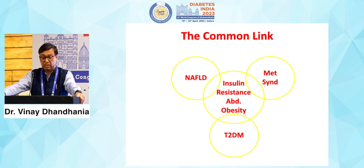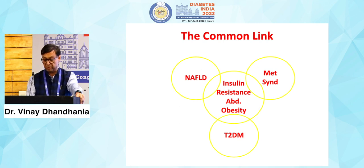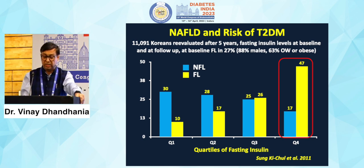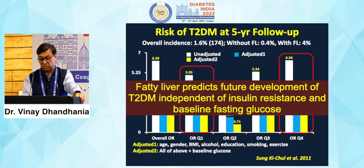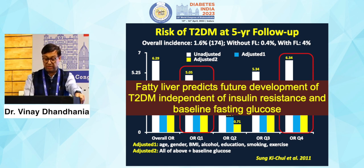A Korean study re-evaluated almost 11,000 Koreans with baseline and follow-up insulin levels. Baseline fatty liver was found in 27% of subjects. Almost 88% of males and 63% overweight or obese individuals had progression to diabetes. The overall 5-year incidence of type 2 diabetes was 1.6%, but without fatty liver it was 0.4%, while with fatty liver it was almost 4% — nearly 10 times more in people with fatty liver.